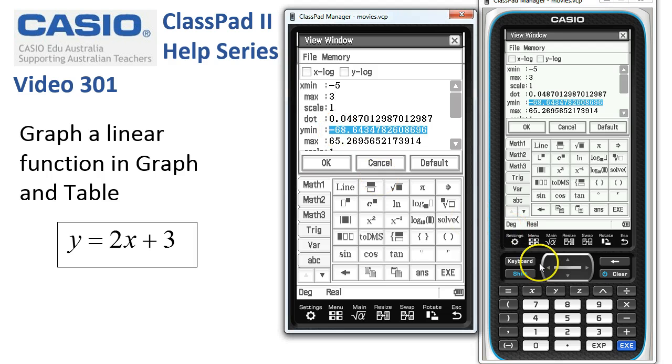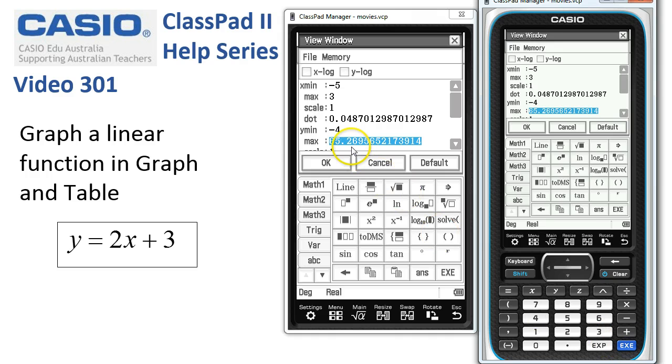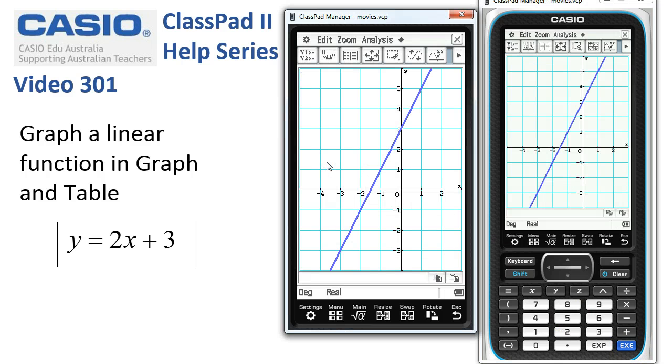But the y min we want as negative four. If I tap execute, we then can enter six for the max. And that'll do us OK. And you can see here now the scale that we have chosen is displayed on the screen.